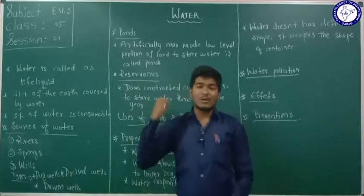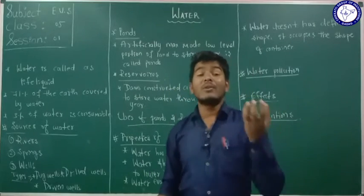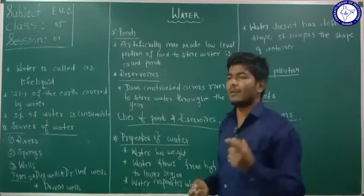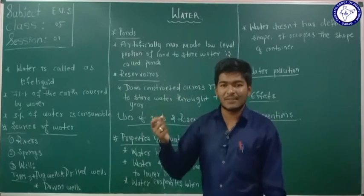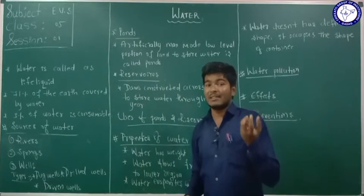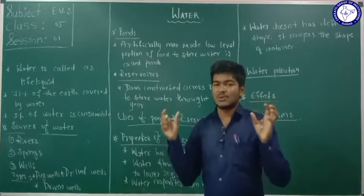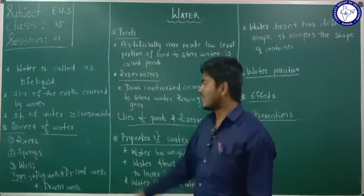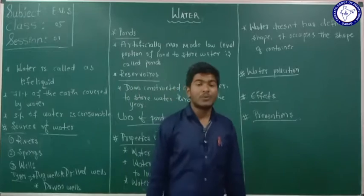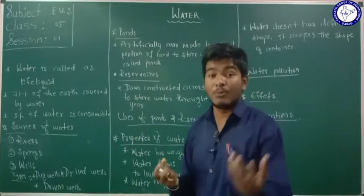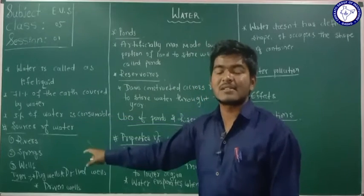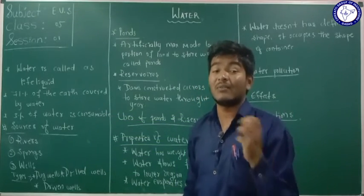You may wonder where we get water — what are the sources? The main source is rain. The first source is rivers. We get water for drinking, bathing, and washing from rivers.